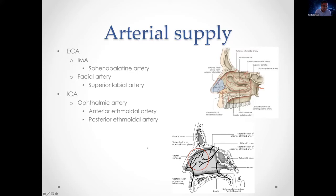The internal carotid system supplies the nose via the ophthalmic artery, which gives off the anterior and posterior ethmoidal arteries. The anterior ethmoidal artery tends to be the larger of the two and supplies the superior part of the lateral nasal wall and septum.